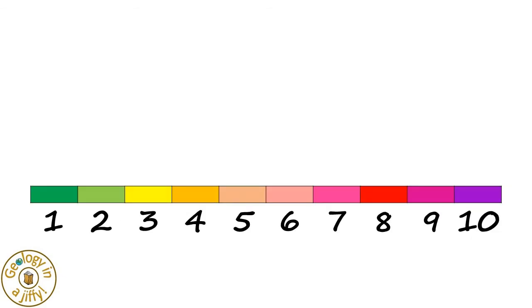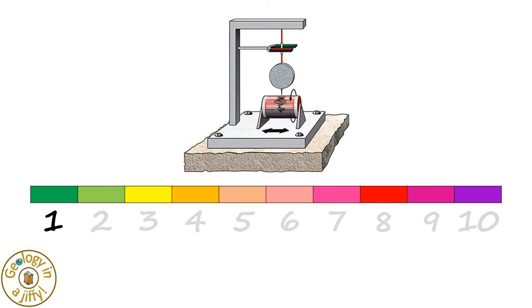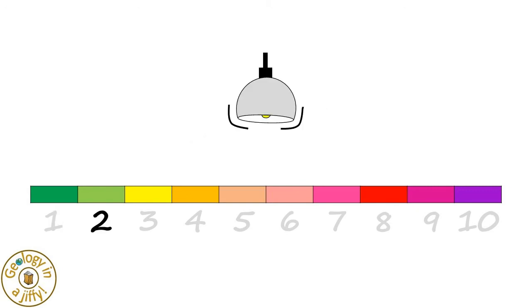On the tenfold magnitude Richter scale, magnitude 1 earthquakes are only detected by seismometers. Magnitude 2 earthquakes will cause hanging objects to shake, and magnitude 3 earthquakes will cause them to swing.